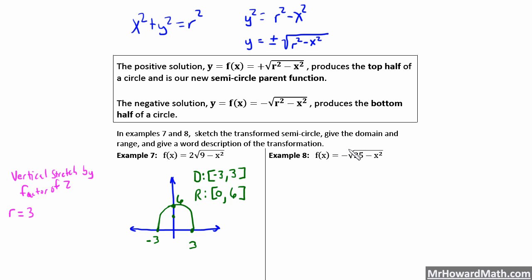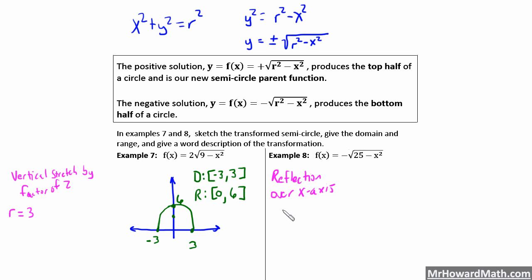Example 8. We have a negative out in front. Going back to our notes, the negative means we're making the bottom of the circle — a negative out in the very front of any parent function reflects it over the x-axis, because all the y-coordinates are now opposite. So we have a reflection over the x-axis. The r squared value is 25, giving us a radius of 5. We have no other transformations.